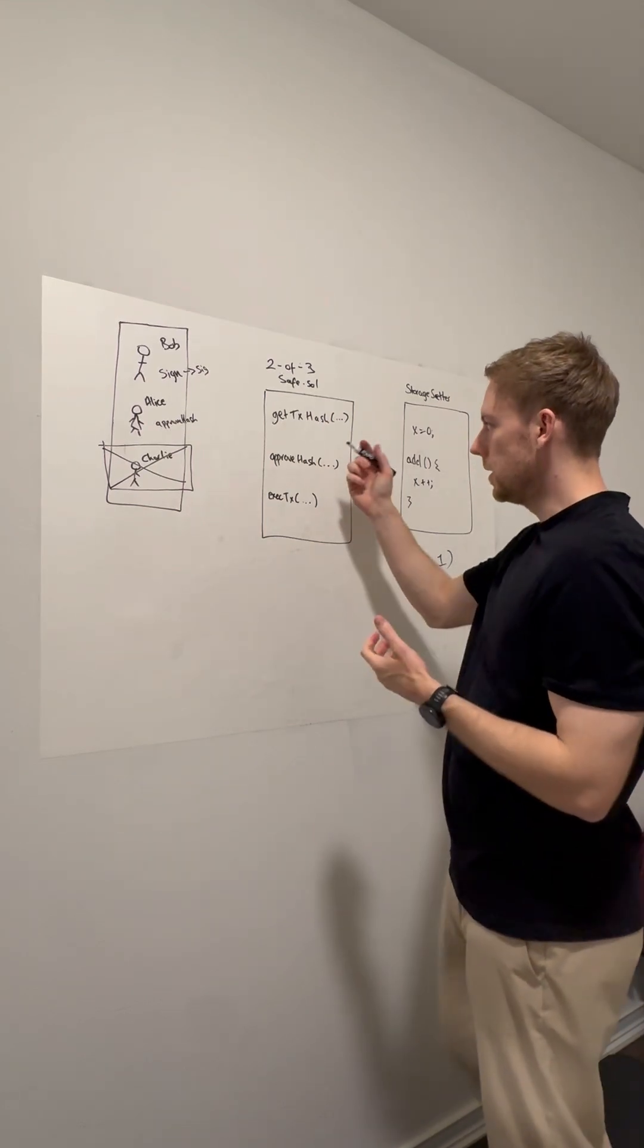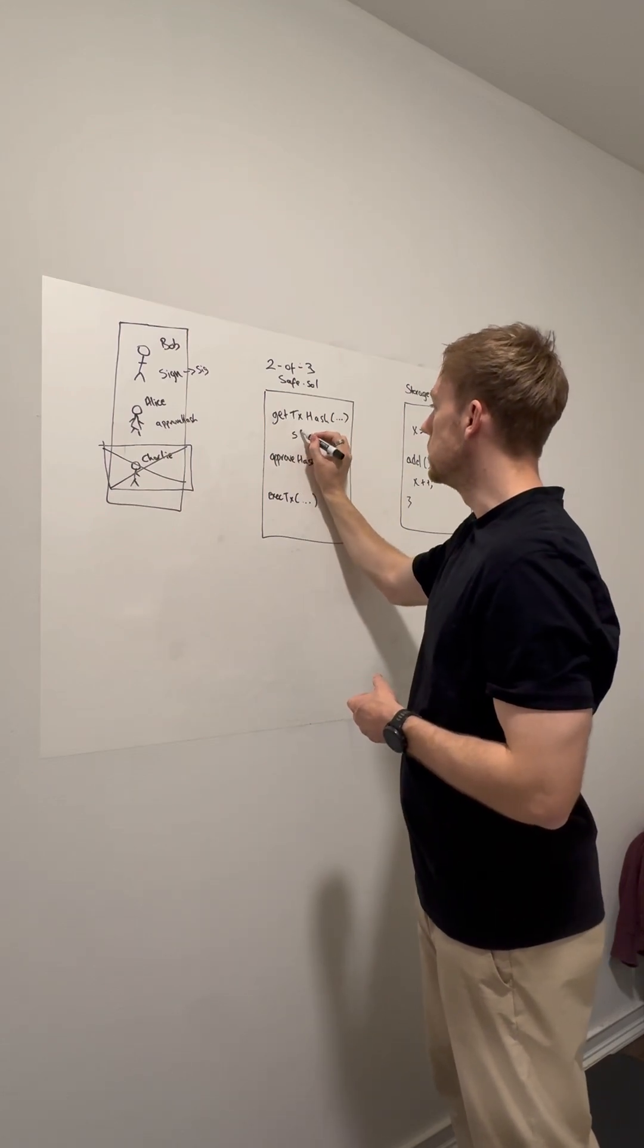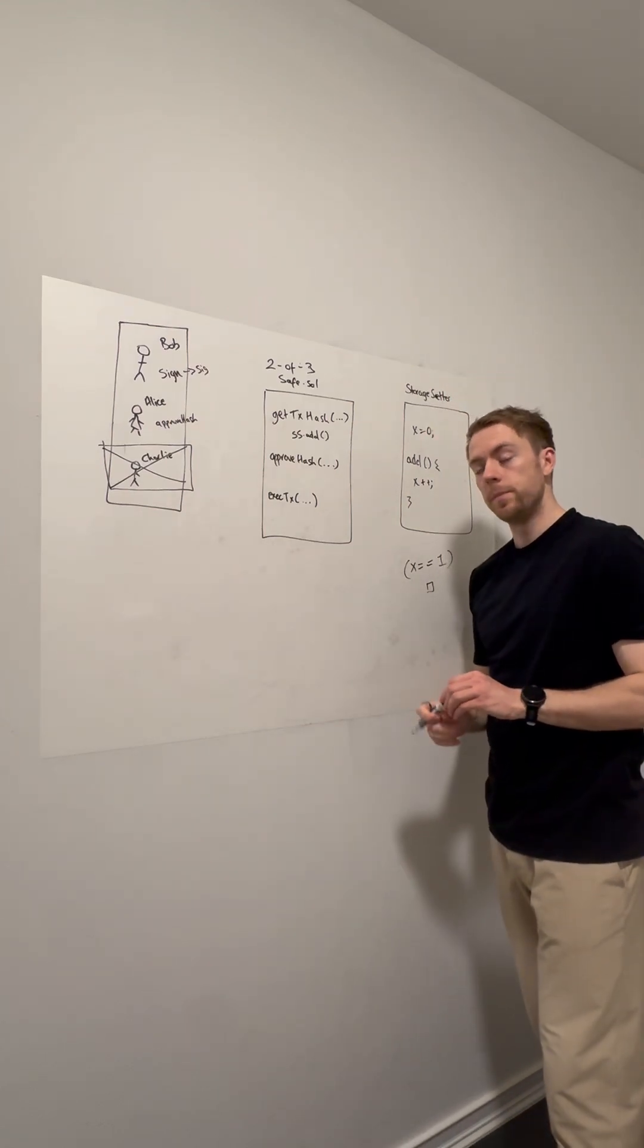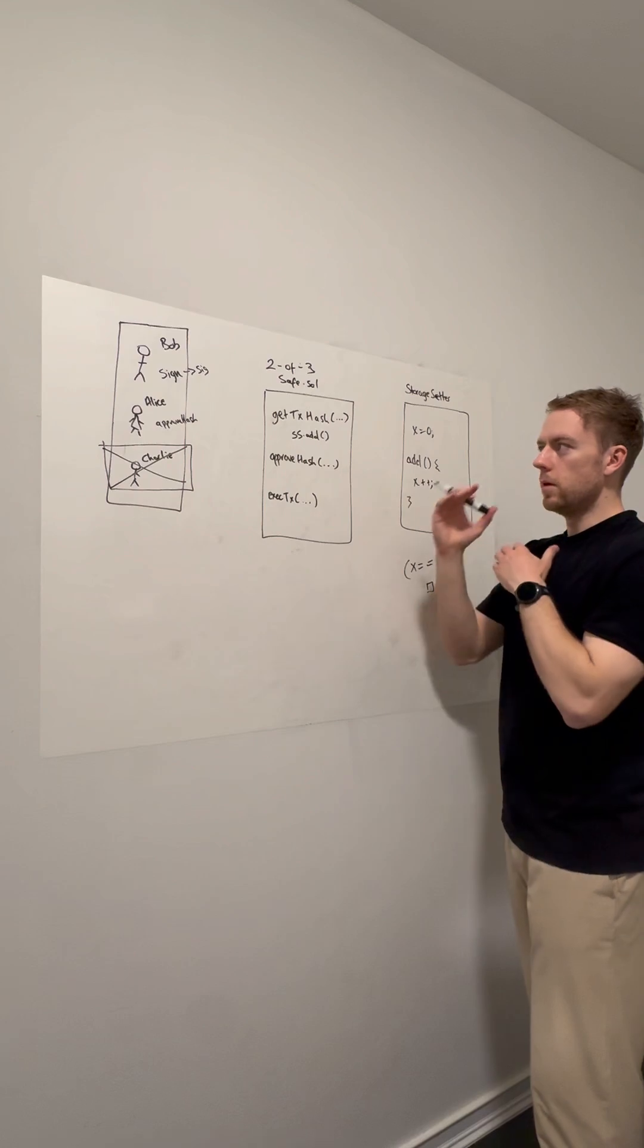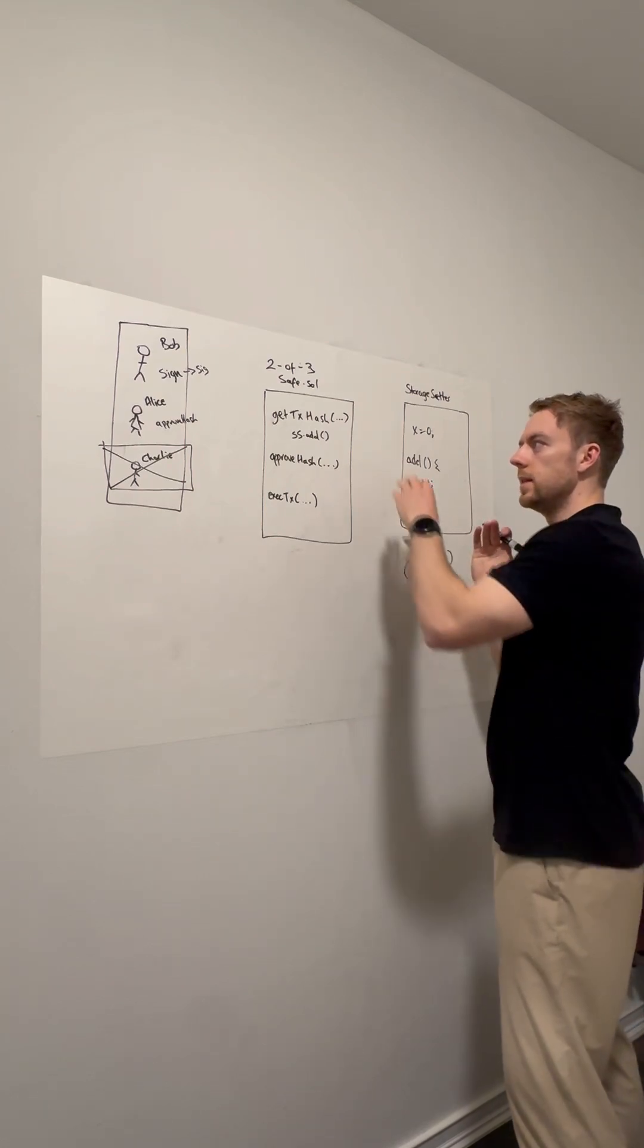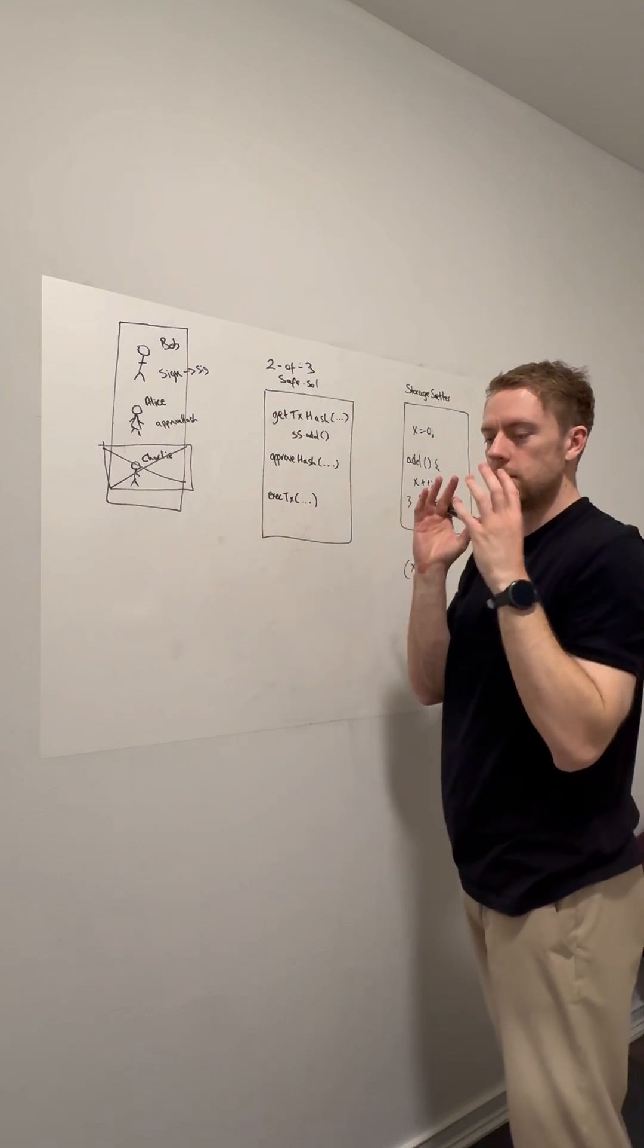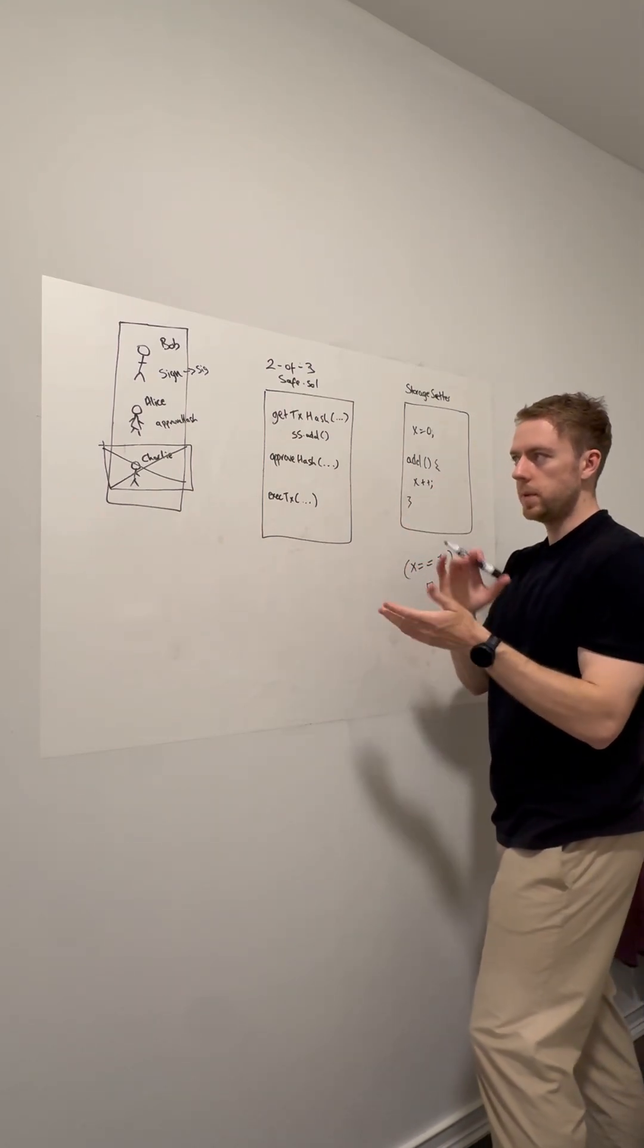Internally, we need to make sure the storage setter.add function is encoded into the hash. Conceptually, this is returning the hash, and that hash represents the storage setter.add function call data that's been encoded.